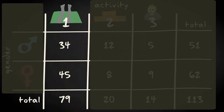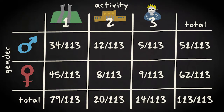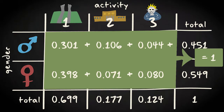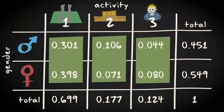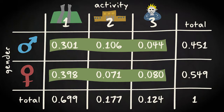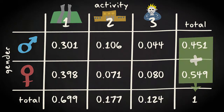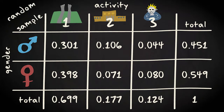Now we turn this frequency table into a table with proportions by dividing the number in every cell by the total number, 113. In this table, the central block contains six positions which together sum to one. The proportions in each column add up to the values in the marginal row at the bottom, and the proportions in each row add up to the values in the marginal column at the right. As a consequence, the marginal column values add up to one, as do the marginal row values. Your count can be considered as a random sample measuring the distribution of activity and gender of people at this beach, and you can think of the proportions as probabilities.